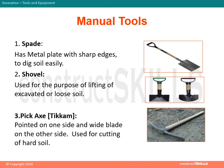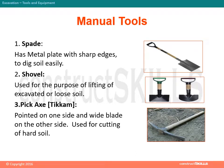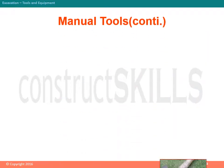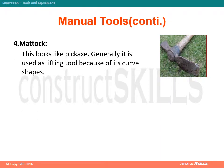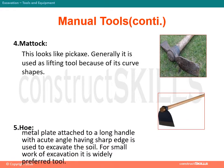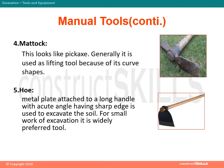Third, pickaxe. It is pointed on one side and has a wide blade on the other side. It is used for cutting of hard soil. Fourth, mattock. This looks like a pickaxe and is generally used as a lifting tool because of its curved shape. Fifth, hoe. It has a metal plate attached to a long handle with a sharp edge and is used to excavate soil. For small excavation work it is a widely preferred tool.